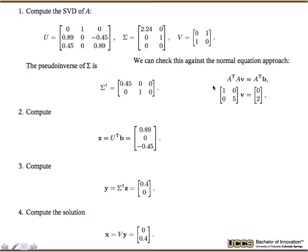Just as a sanity check, you can go back to the normal equation approach for this matrix. We take A transpose A v equals A transpose b. You get the system [1, 0; 0, 5] v equals [0; 2], which of course gives us the same value of 0 and 0.4.